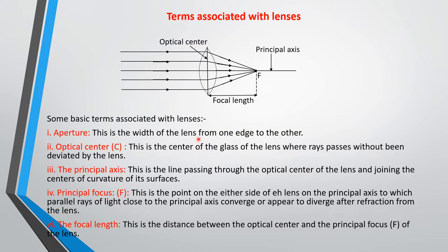Just like we discussed curved mirrors, there are terms associated with lenses. The aperture is the width of the lens — the distance from one end to the other. The center of the lens is called the optical center, where any ray that passes through may diverge or converge. The principal axis is a line that passes through the optical center of the lens, joining the center of curvature of each surface.